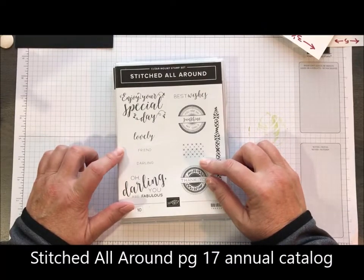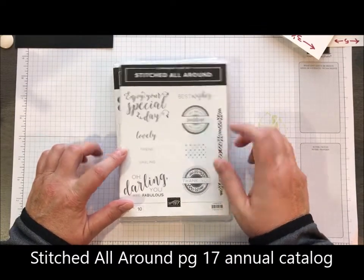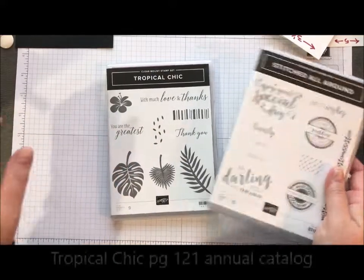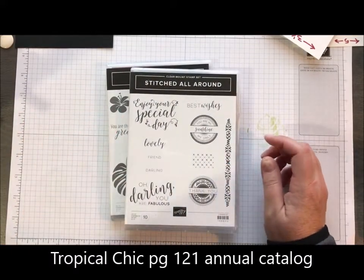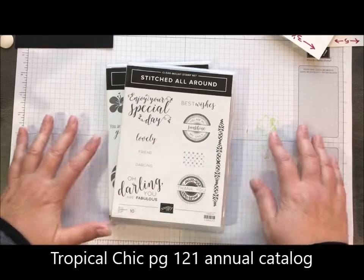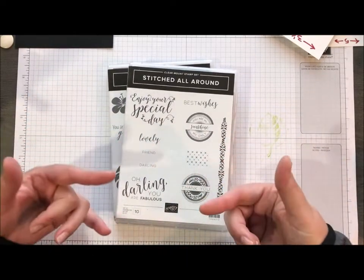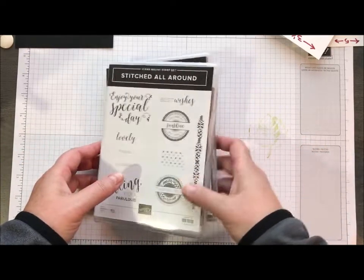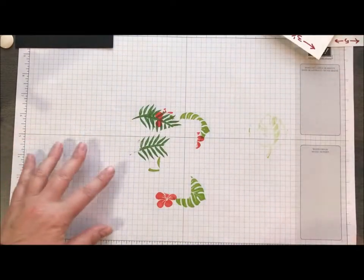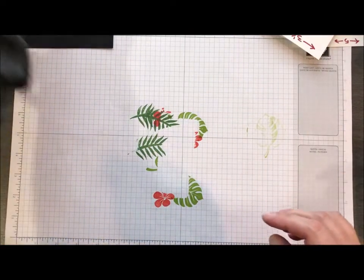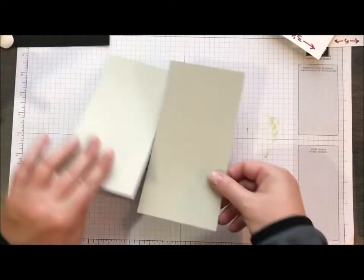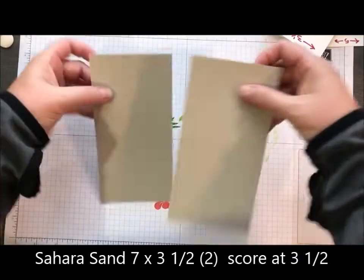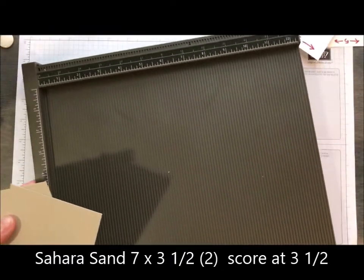I used the Stitched All Around dies and stamp as well as the Tropical Chic dies and stamps. A lot of my stamping was pre-done ahead of time and I used a combo of black Sahara Sand and Granny Apple Green and then the 6x6 Tropical Chic Designer Series paper as well. So we are going to take, let's go ahead and do our scoring.